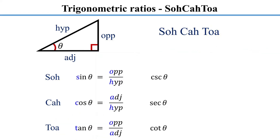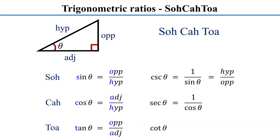The other three ratios are simply the reciprocals of these basic ratios. Cosecant is the reciprocal of sine, so it is hypotenuse over opposite. Secant is the reciprocal of cosine, so it is hypotenuse over adjacent. Cotangent is the reciprocal of tangent, so it is adjacent over opposite.